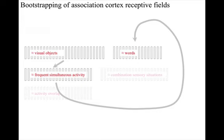Genetic bias means that output connectivity targets the apical dendrites of the neurons in that area. And again, experience will result in the target neurons developing the appropriate indirect activation receptive fields.